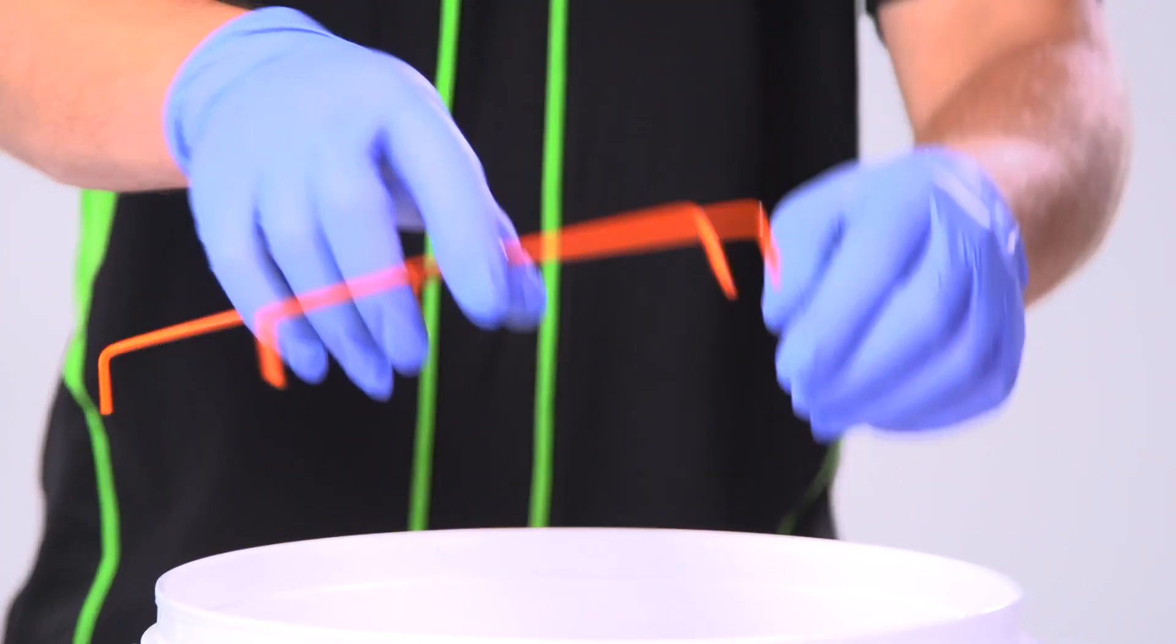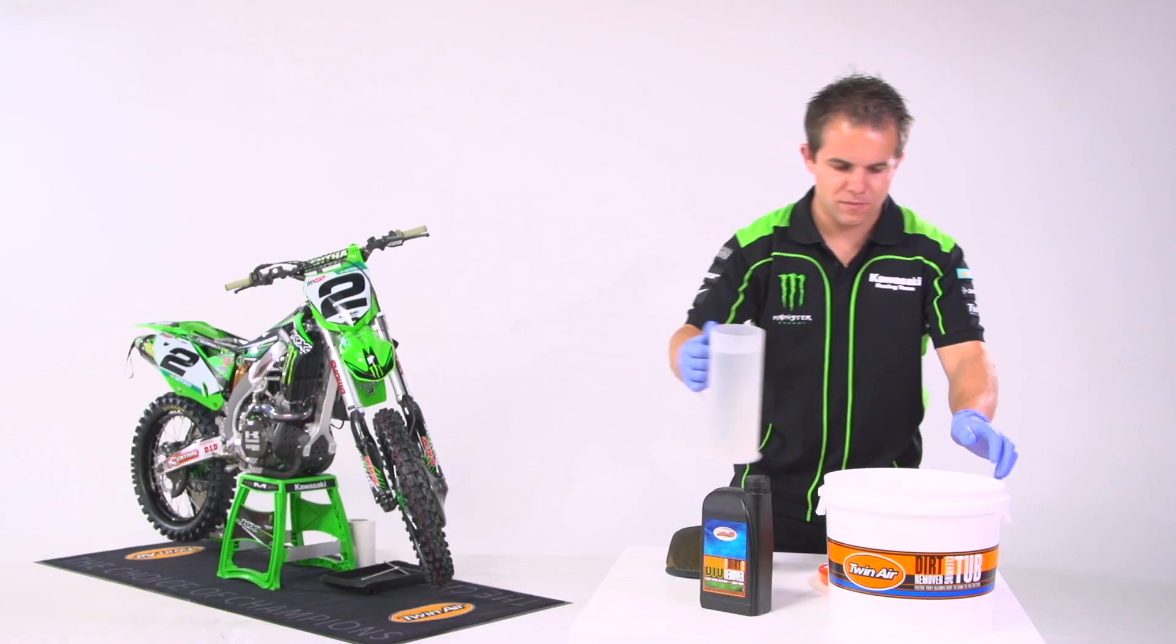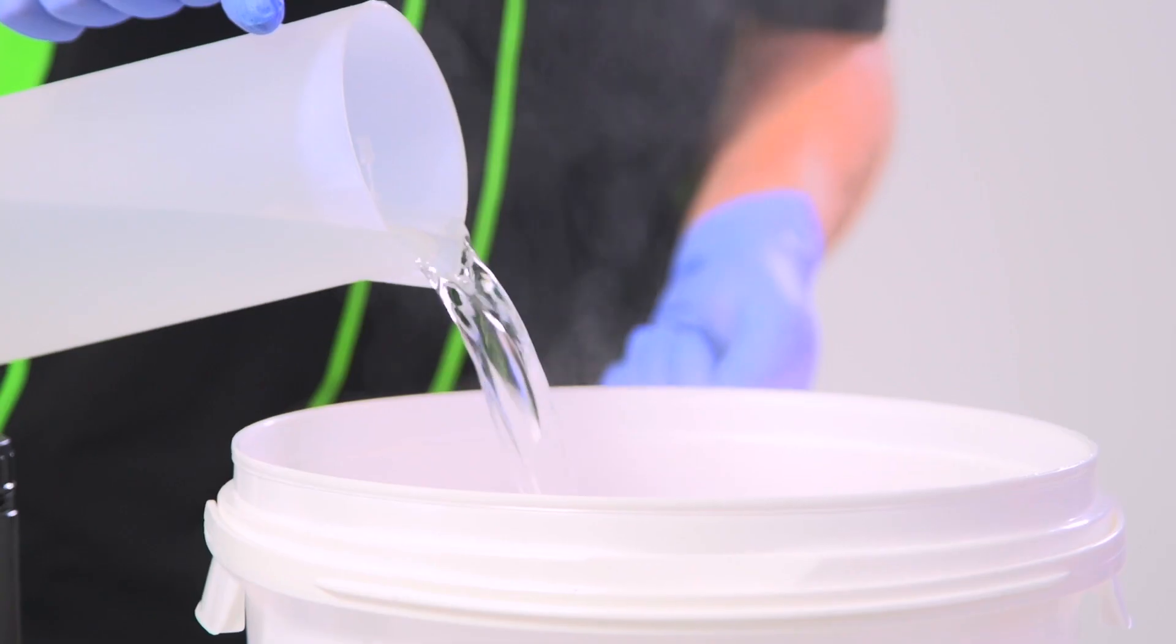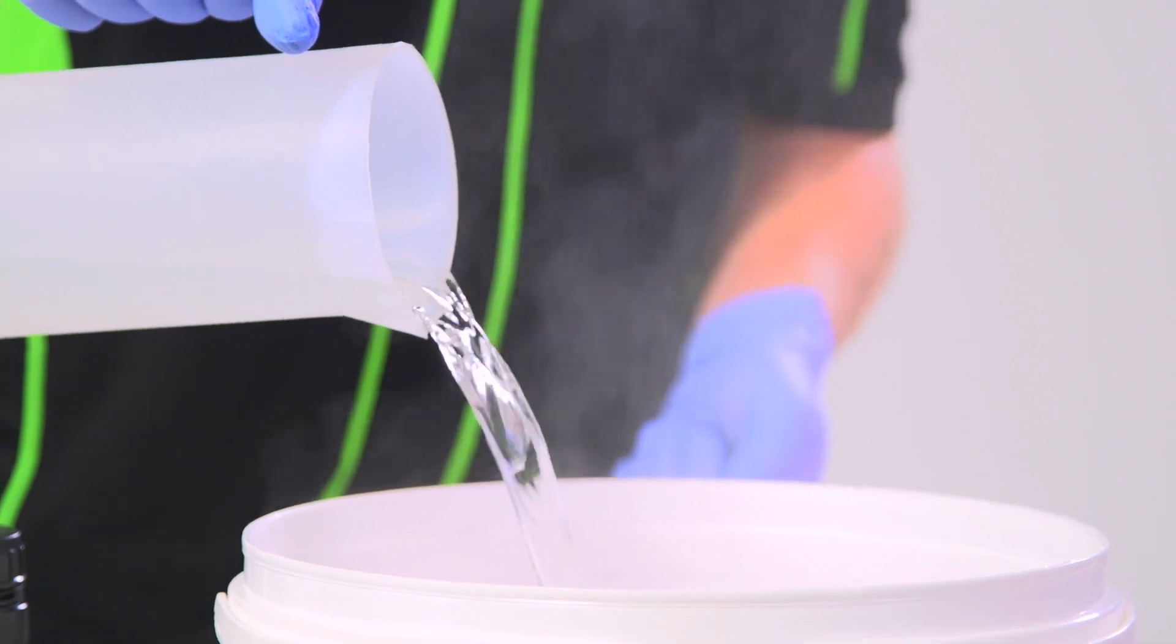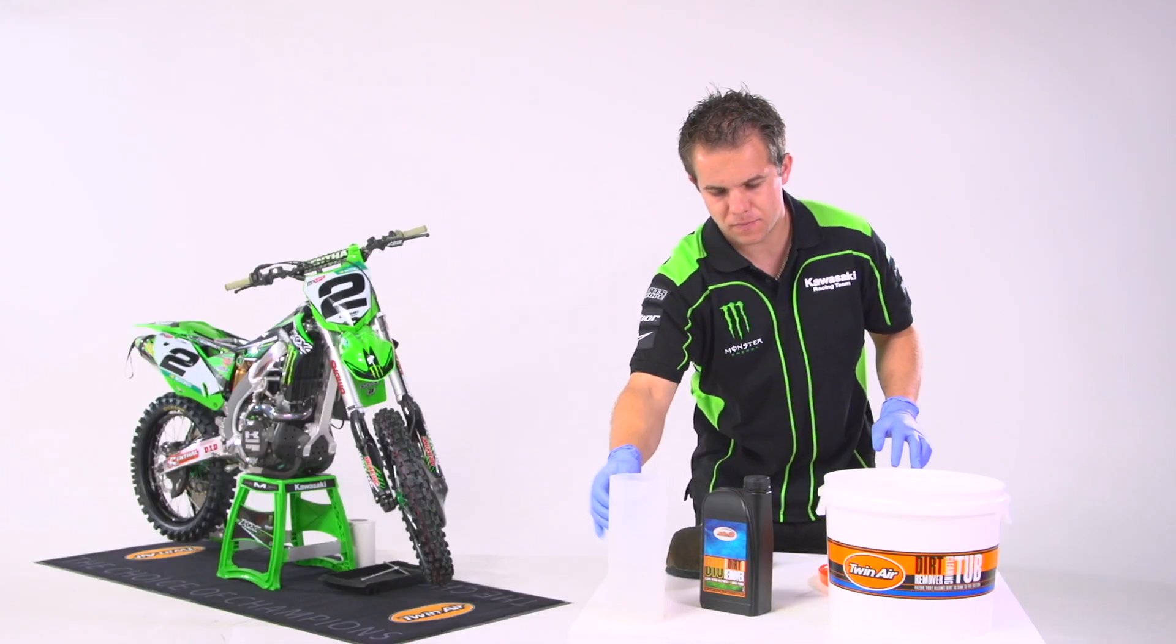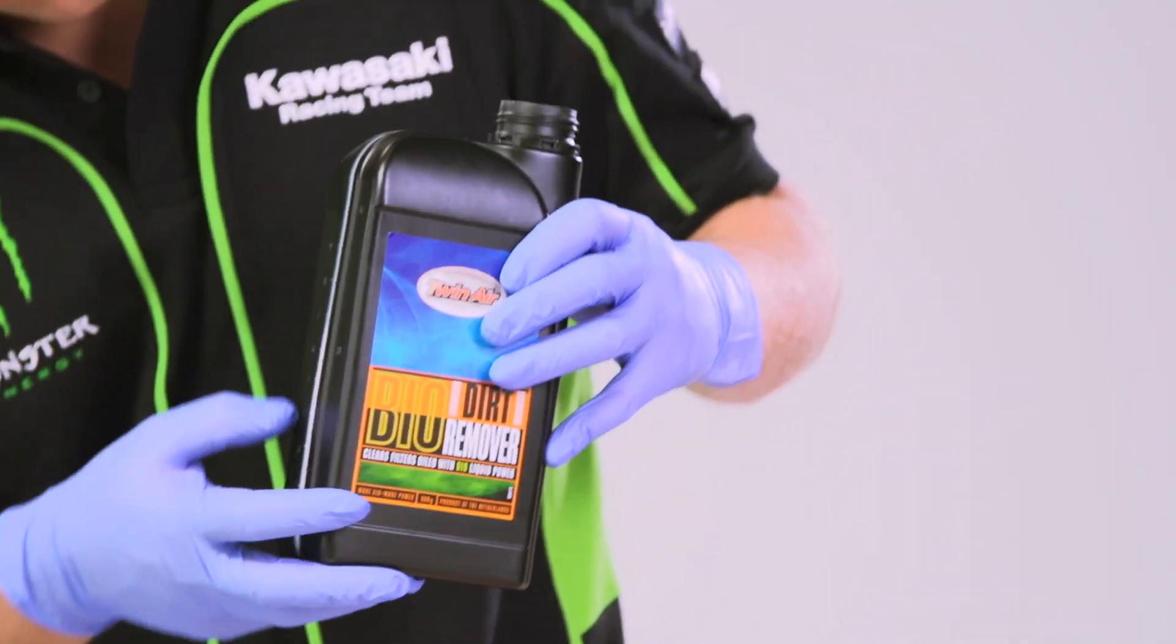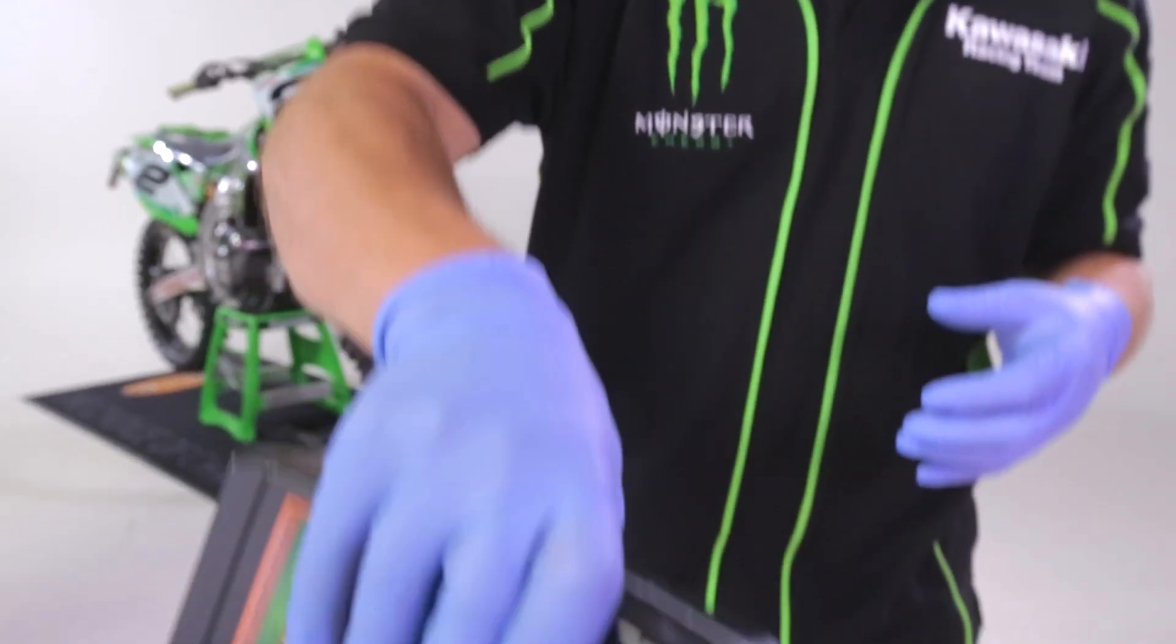Put three liters of tap water as hot as possible in the large cleaning tub. Add approximately 100 milliliters of bio dirt remover to the water per filter.